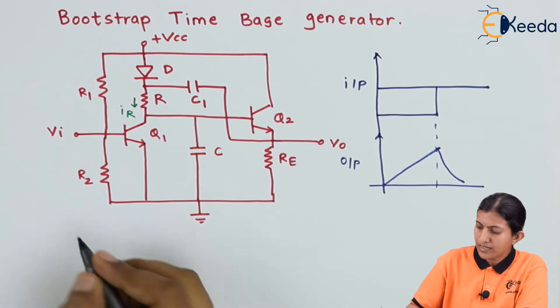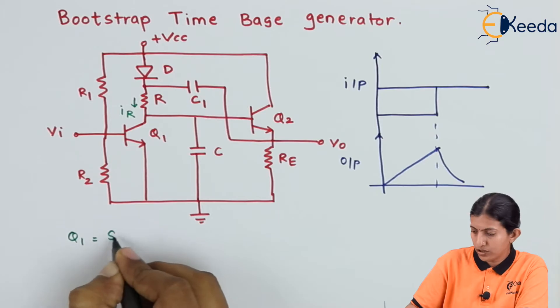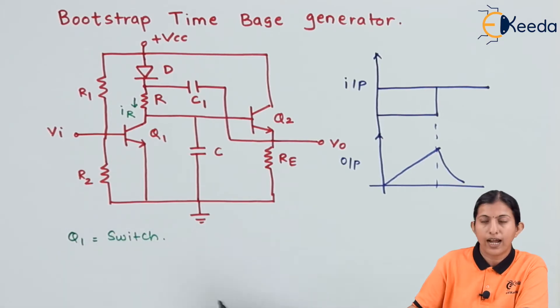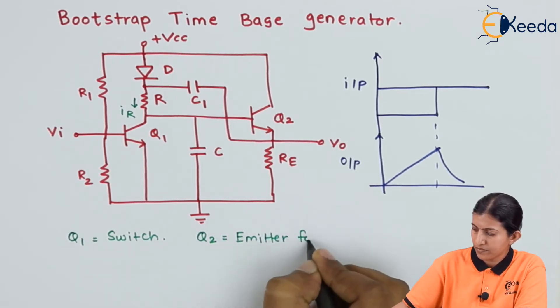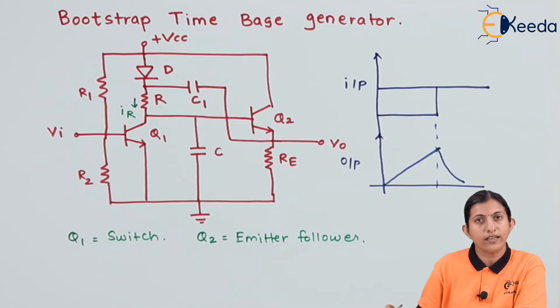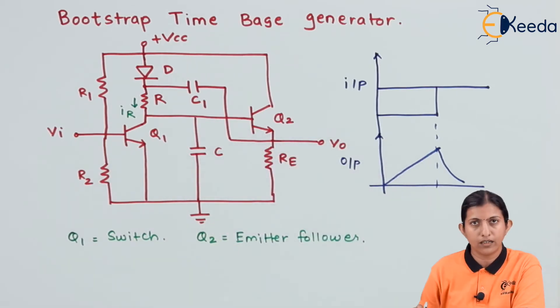The transistor Q1 will act as a switch and transistor Q2 will act as an emitter follower. Why is it an emitter follower? Because the output is taken across the emitter terminal.